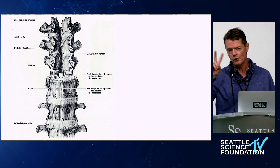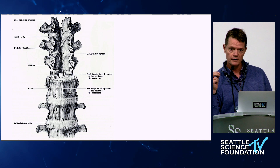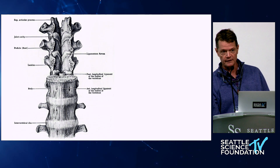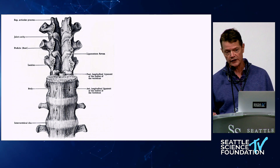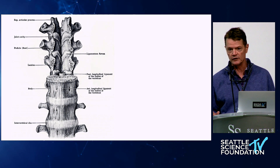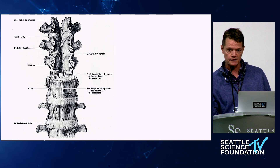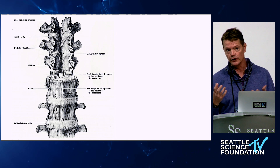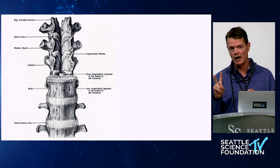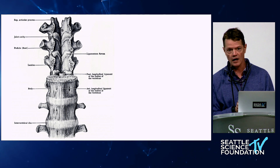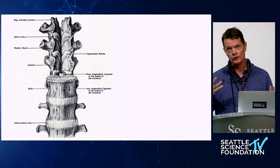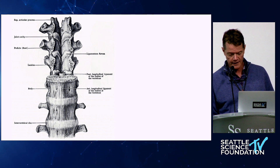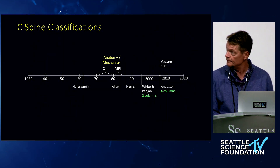Ligaments fail in two important ways: they fail in distraction, not in compression. So with a compressive loading injury you should not anticipate ligament failure. Also, ligaments fail in concert, not in isolation. You can imagine isolated failure of the supraspinous or interspinous ligament, but if the capsular ligaments don't fail it's clinically irrelevant. These are two concepts that radiologists often do not understand.